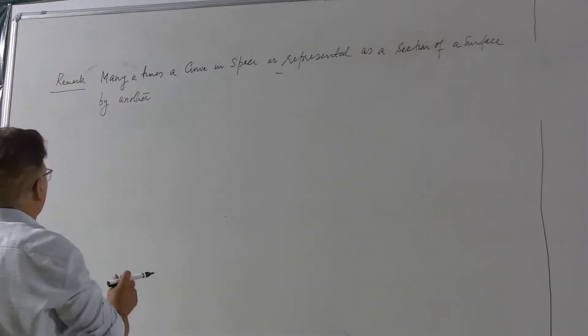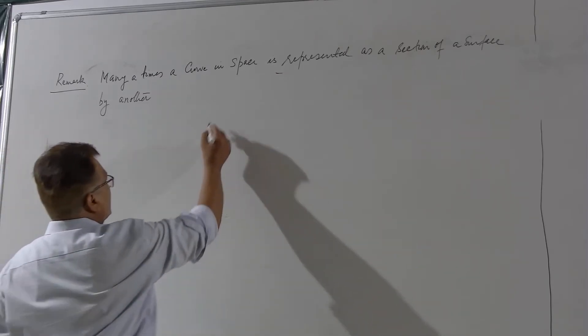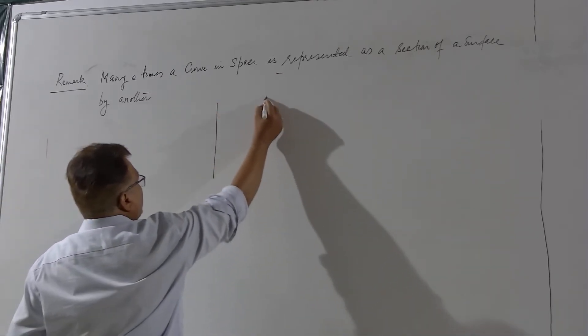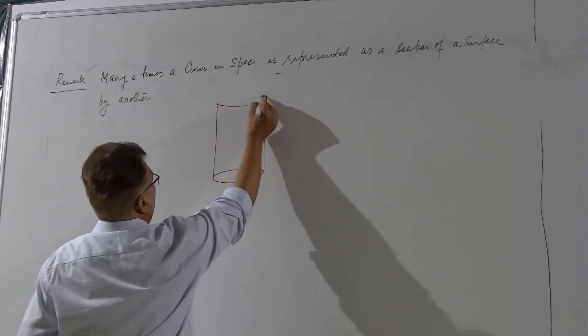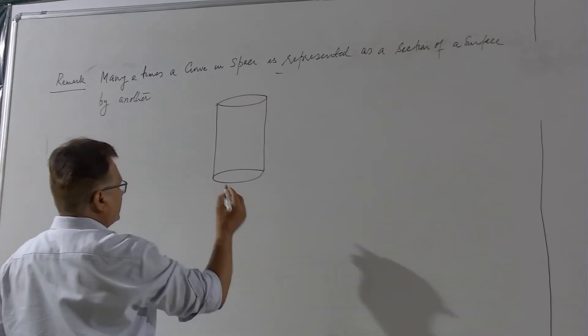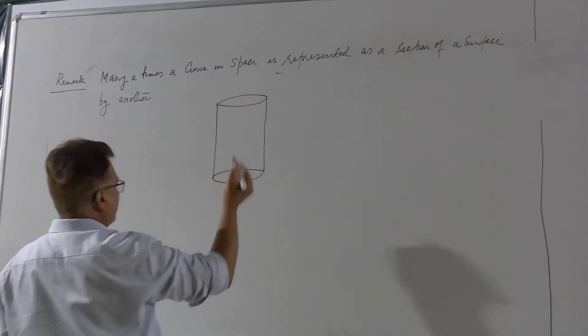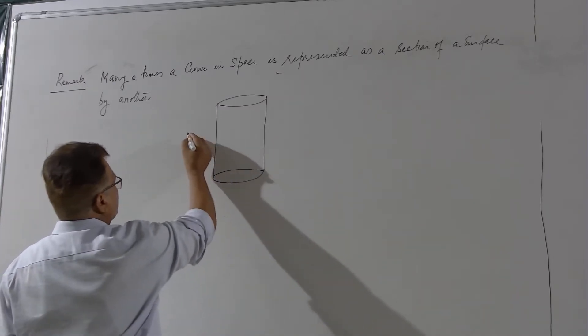For example, you can see that if you consider a cylinder, cylinder is a surface in R³ and its equation is given by, say anything I will discuss that later. Suppose this is a cylinder which is a surface.